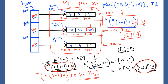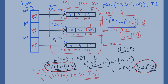When considering a two-dimensional array, *(*(P+i)+j) is the equivalent pointer notation for accessing a particular cell P[i][j]. In the next tutorial, I will be developing a dynamic two-dimensional array using a one-dimensional array of pointers and dynamic allocation techniques such as malloc or calloc. That's all for now, thank you.